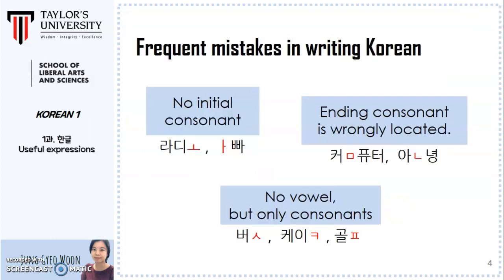Here we can have a deeper look at some frequent mistakes in writing Korean. First, students often forget that there must be an initial consonant even if only a vowel is actually pronounced — in this case, a circle-like consonant is needed, and it is silent when used as an initial consonant. Second, students are aware that there is an ending consonant in the syllable but locate it wrongly. If you pronounce it as one unit, the consonant must be attached to the vowel and written in the same syllabic unit. Ending consonants are always located at the bottom part of the syllabic unit.